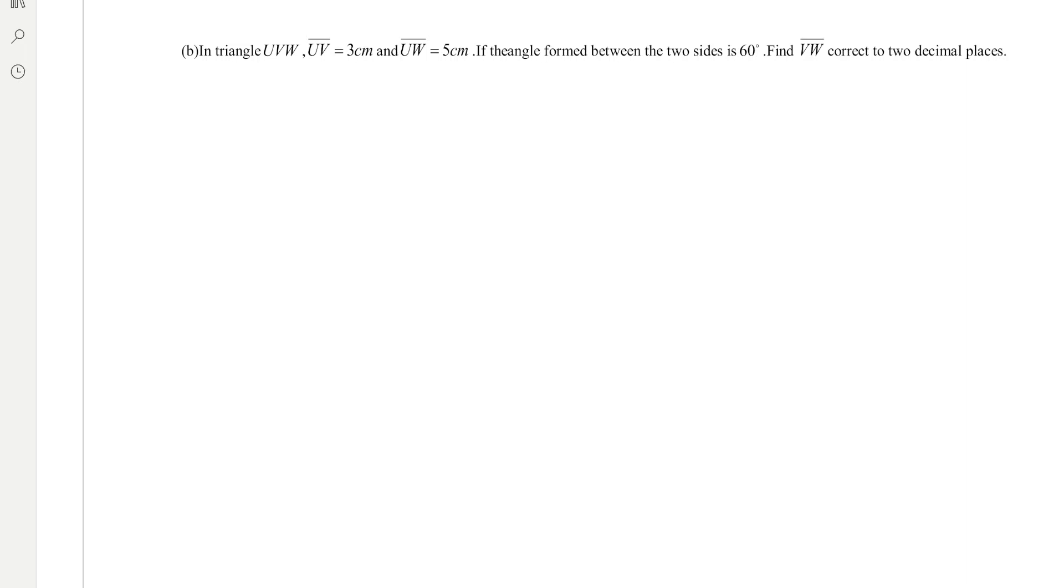Hi students, welcome to EK Academy again. So we'll be solving this question here. In a triangle UVW, UV is 3 centimeters, UW is 5 centimeters. If the angle formed between the two sides is 60 degrees, find VW correct to two decimal places.